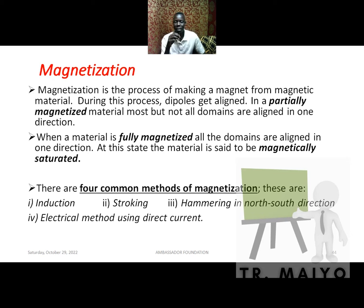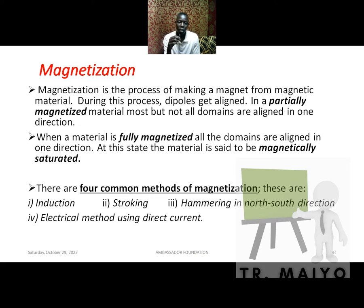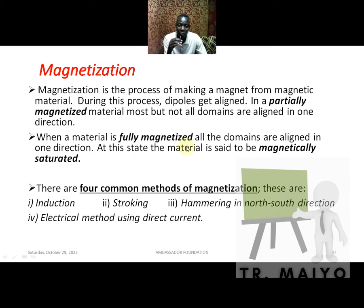Magnetization is the process of making a magnet from a magnetic material — not just any material, only those which are magnetic. During magnetization we are aligning the dipoles. Once aligned, you have made a magnet — it can be either permanent or temporary. When a material is fully magnetized, all the domains are aligned in one direction — that is magnetic saturation.